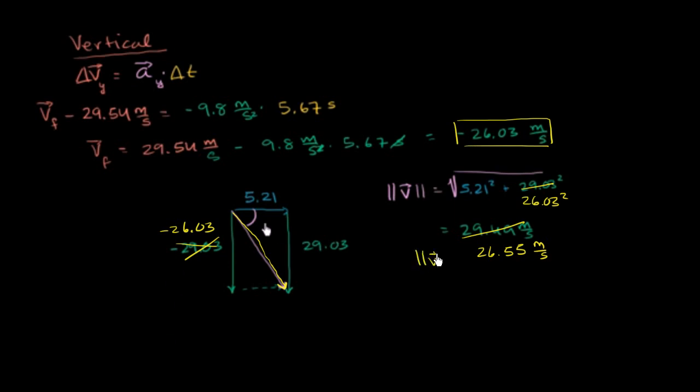So that is the magnitude of our total final velocity. And the angle, since this is not 29.03, this is 26.03, we can say that the tangent of this angle theta is equal to just the raw side, this value right over here. So is equal to the length of this vector right over here, which is the opposite side, 26.03, over the length of this vector here, which is 5.21.